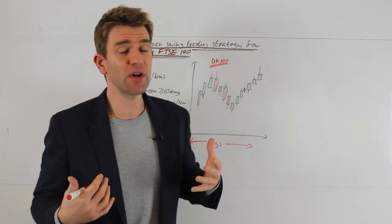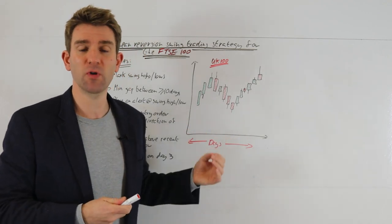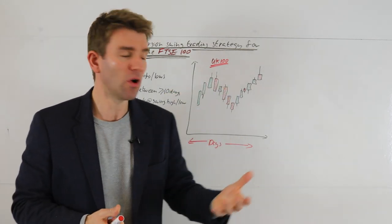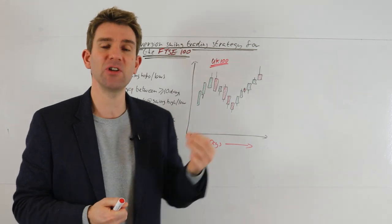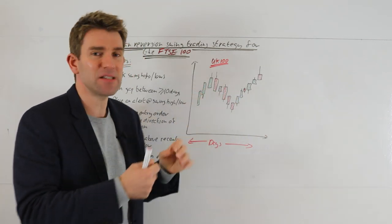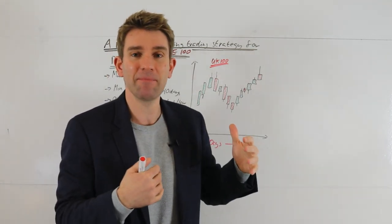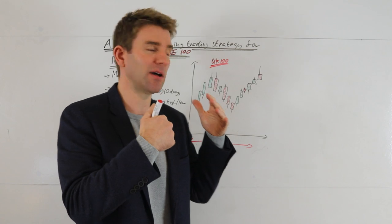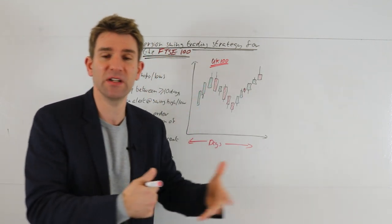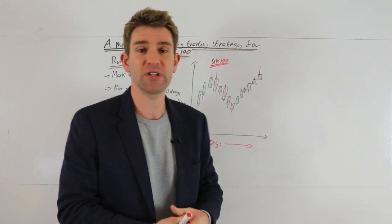So you want some rotation, some retest, a sign of failure, and then we're taking a trade in the direction of that failure — really looking only for a quick move. The idea is we're seeing the 'whites of the eyes' of the opposing side; supply and demand is shifting. We're joining that move, framing the trade with a sensible stop position based on what's happened recently, and we're looking for a counter-trend type trade.